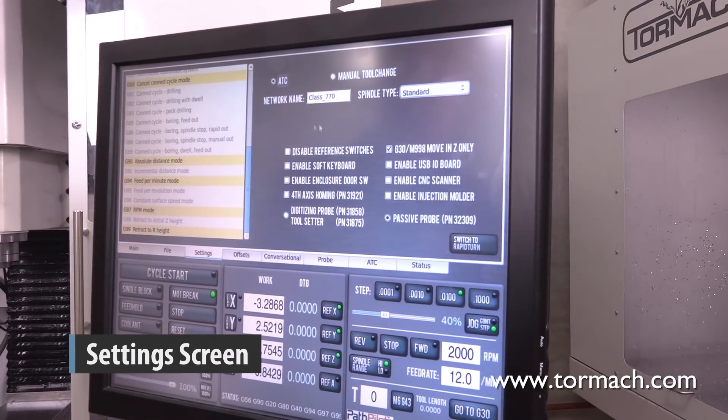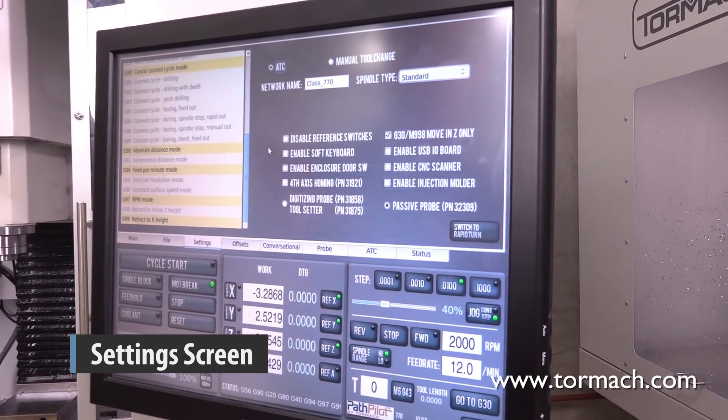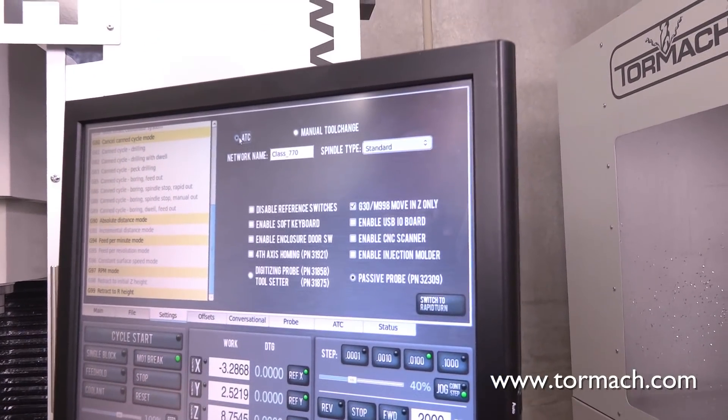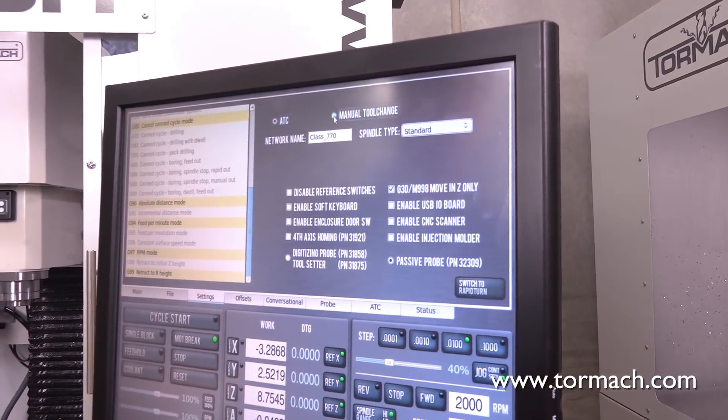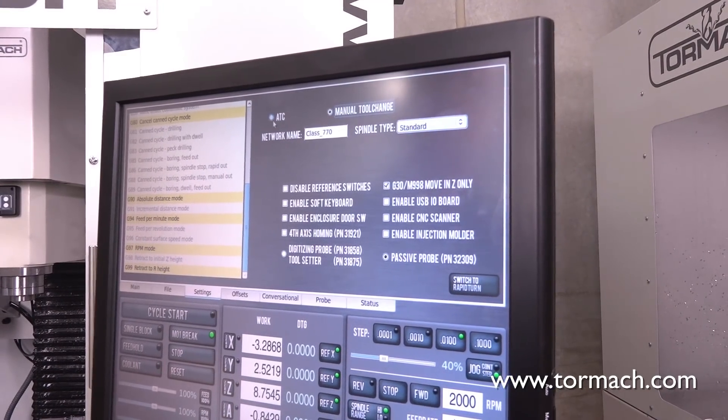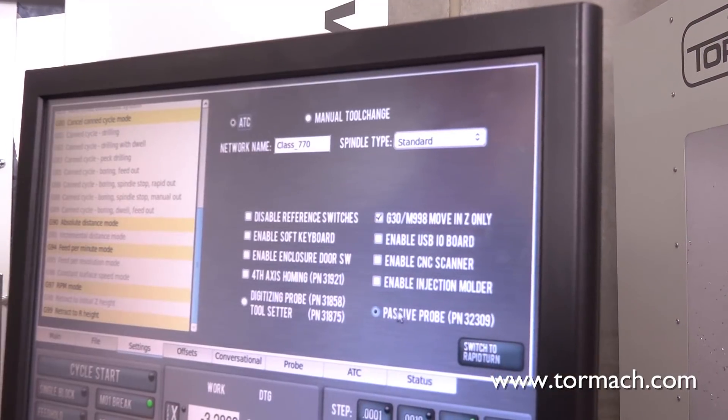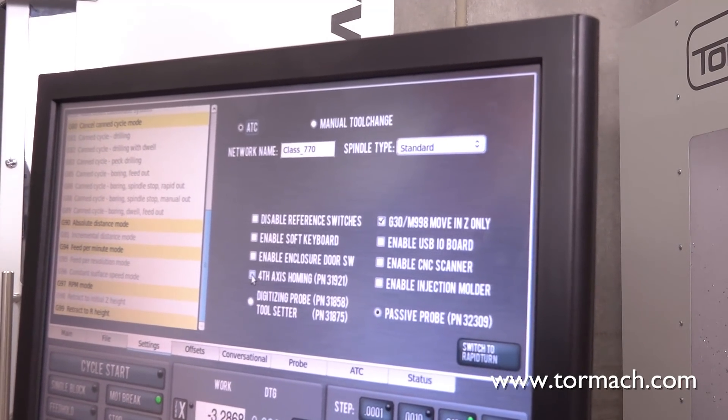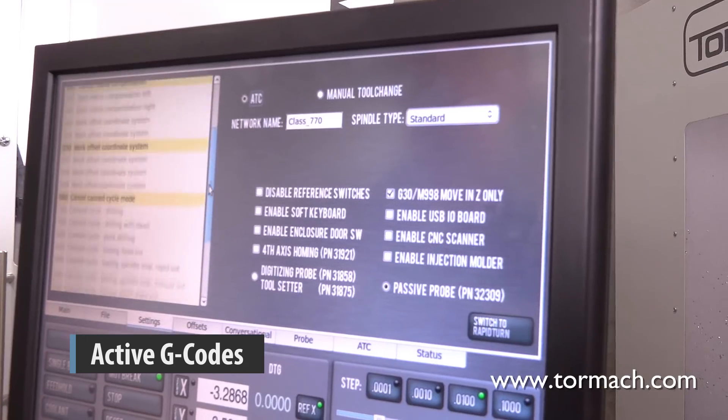We go to the settings screen. This just allows you to select some of the options you may have with your machine. So for instance, this machine is equipped with an ATC. But if I were changing tools manually, I'd select the manual tool change option. Passive probe versus a digitizing probe. Perhaps you have a fourth-axis homing kit, et cetera.